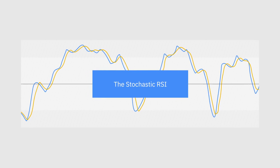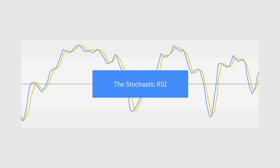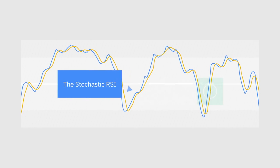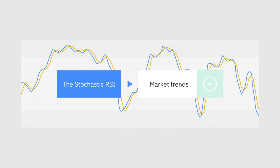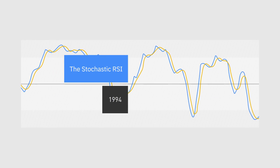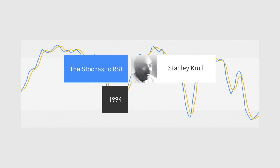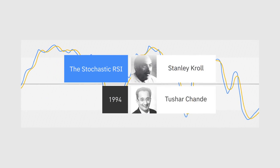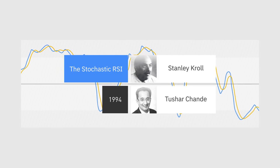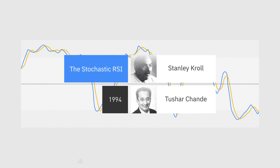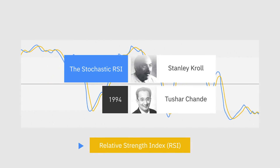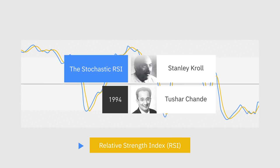The stochastic RSI is a technical analysis indicator used to identify market trends. It was created in 1994 by Stanley Kroll and Tushar Chande with the goal of increasing the sensitivity of the regular relative strength index, or RSI, indicator.